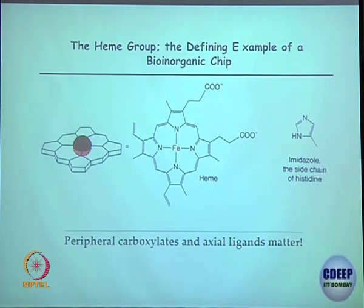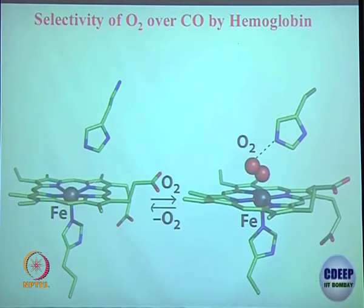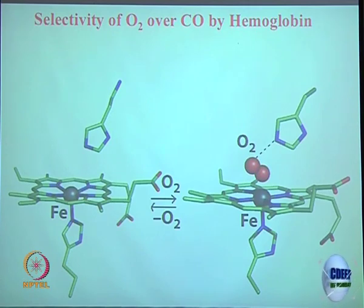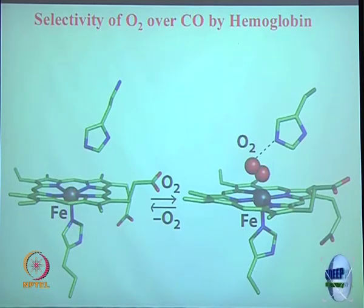This is iron 2+ in high spin form. The moment oxygen binds over here, it goes to low spin form. It is now an octahedral complex — a very good octahedral complex. Iron 2+ high spin means T2G4 EG2. Upon oxygen binding it goes to T2G6 EG0 — that is high spin to low spin configuration change.